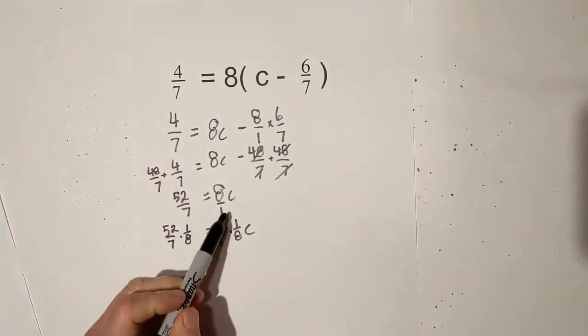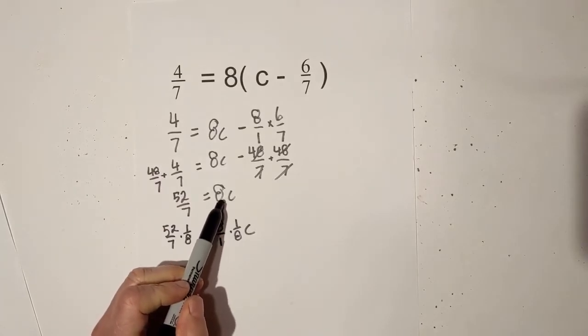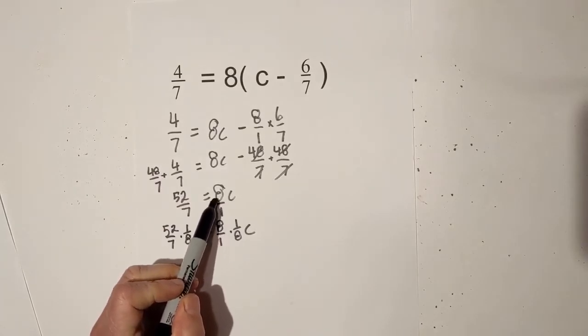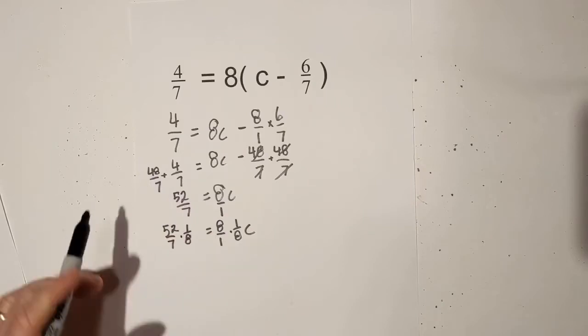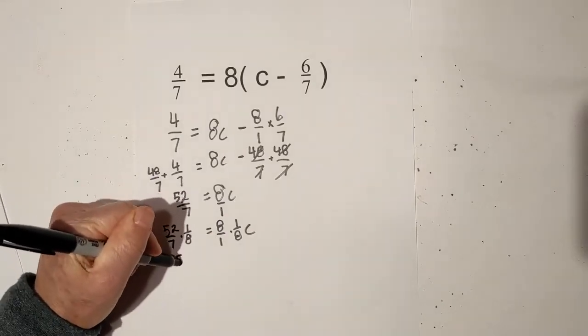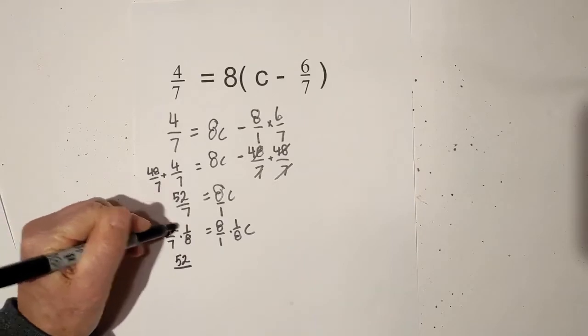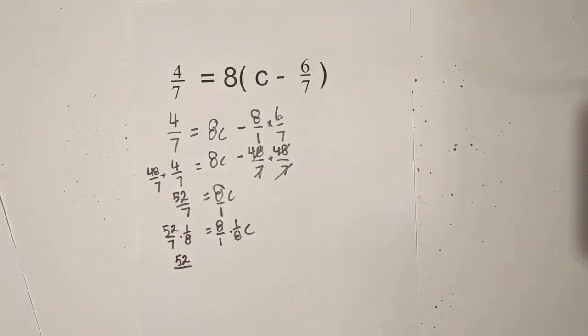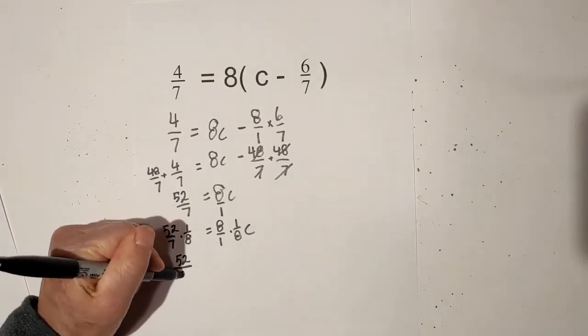So what I'm going to do again, I put it as a fraction and then multiplied it by its reciprocal. And so I'm going to do the same thing over here: 52 over seven times one over eight, because I'm doing the opposite operation. Instead of multiplication I'm doing division - I can just multiply it by its reciprocal. So now that gives me 52, because 52 times one is 52. Seven times eight is 56.